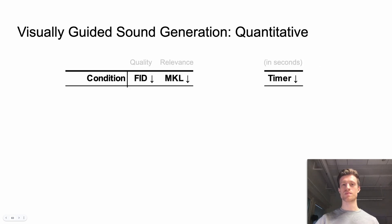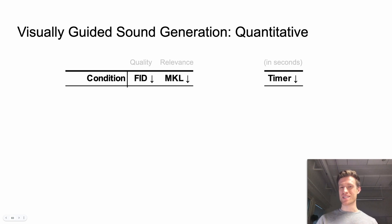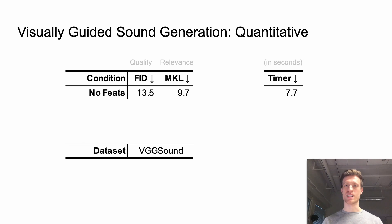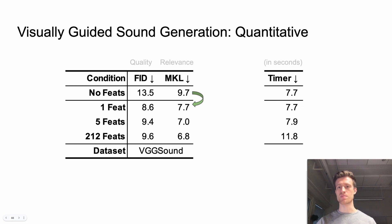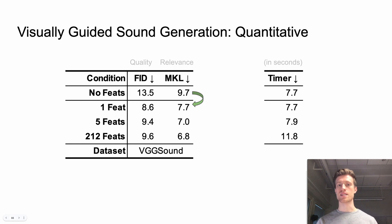Now let's move on to the second step of visually-guided sound generation. To put these numbers into context, let's first consider a model that inputs no visual information. This result provides us with a lower bound on relevance. Now let's add visual features to the condition — one, five, and all available frames from a video. Adding at least one frame already significantly improves the relevance of generated samples.